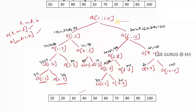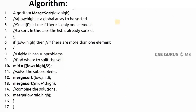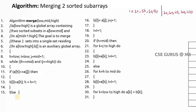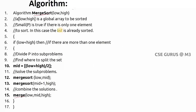The merge sort algorithm uses two procedures: one named MERGESORT and another named MERGE. MERGESORT is a recursive procedure — it calls itself recursively. I'll explain both using the example we have already taken.